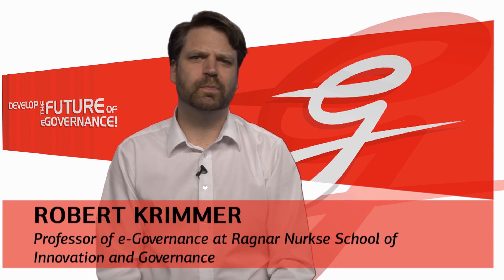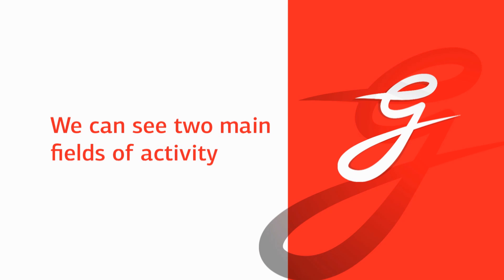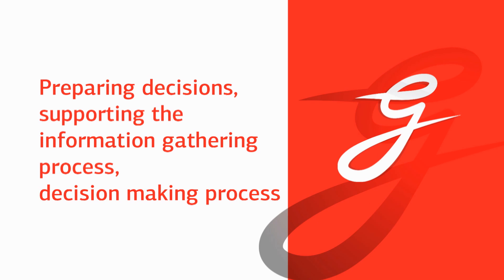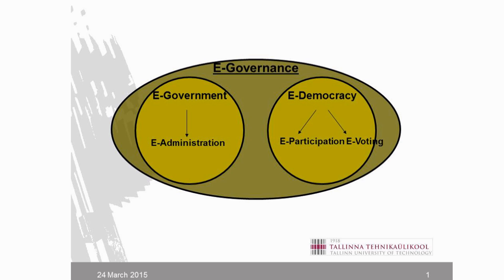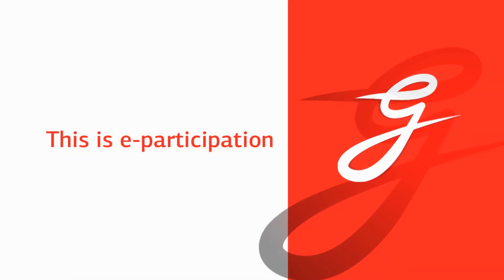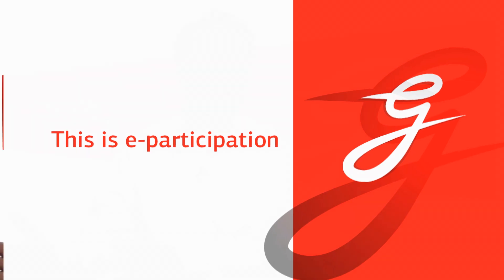When we talk about e-democracy — about using IT for supporting the democratic process — we can see two main fields of activity. On the one hand, it is about preparing decisions, supporting the information-gathering and decision-making process when people form their opinion. That is the so-called e-participation field, in contrast to the one where it's really about the actual decision, which is called e-voting.